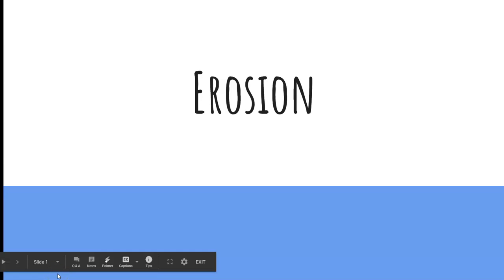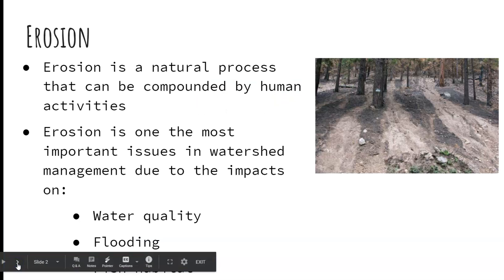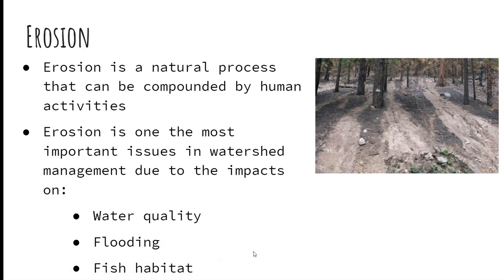This week we are talking about erosion, something many of you are familiar with. First, I want to emphasize that erosion is a natural process, and it is often compounded by human activities. When we're talking about forested watersheds, we're talking about wildland fires, logging practices, and road building, which are huge factors that impact erosion. It's a very important issue because it impacts water quality and is going to add to turbidity.